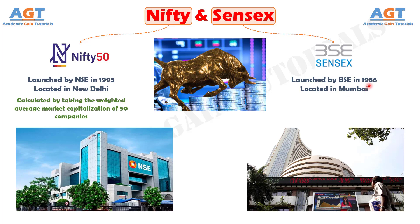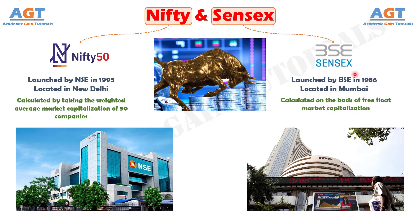The index is calculated on the basis of free float market capitalization, which is calculated by multiplying the weighted average of shares held by the government and the promoters of the company with the weighted average price. The base year is 1978 to 1979, and the index value is 100.